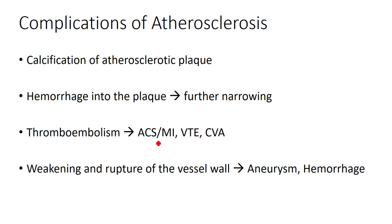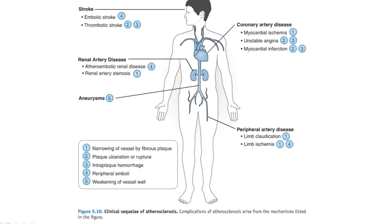You can also have thromboembolic events — heart attacks, acute coronary syndrome, MI, venous thromboembolism, or strokes. There are quite a few different things that can happen related to atherosclerosis, and depending on the morphology of the lesion or complication, different things can manifest. Probably the most common acute event is going to be that thromboembolic event, which we see with myocardial ischemia and stroke.